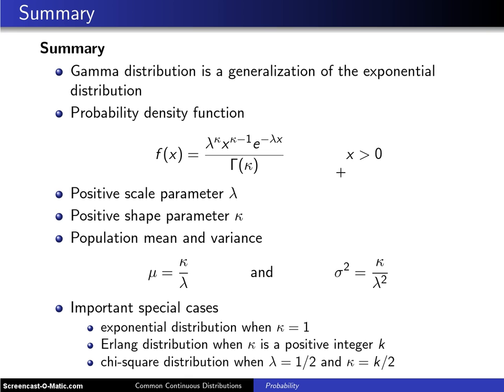There are two parameters in the gamma distribution. The first is λ, a positive scale parameter. The second is κ, a positive shape parameter.